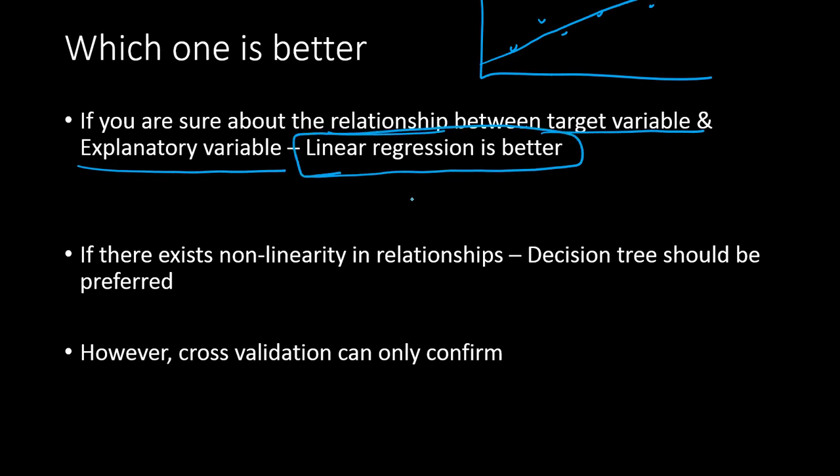But many a times the relationship between the target variable and the explanatory variables are not very clear. Sometimes there is very complex relationship that exists between the data that you cannot simply visualize and understand that it is linear in nature. In those scenarios, it is always good to go with decision tree. You could have situations where the data is something like this.